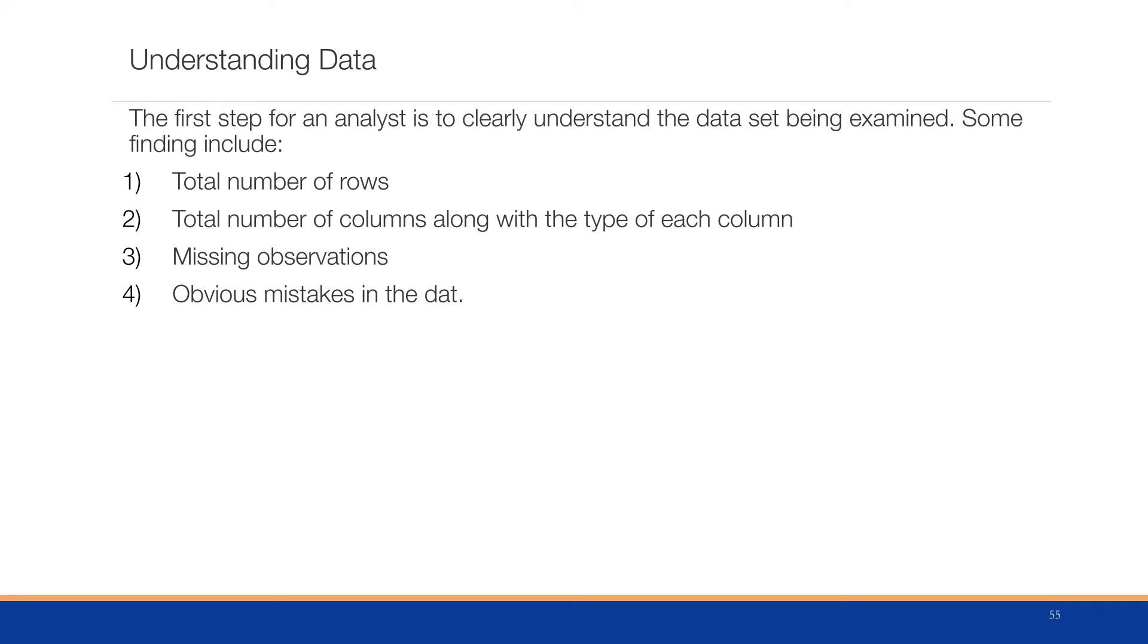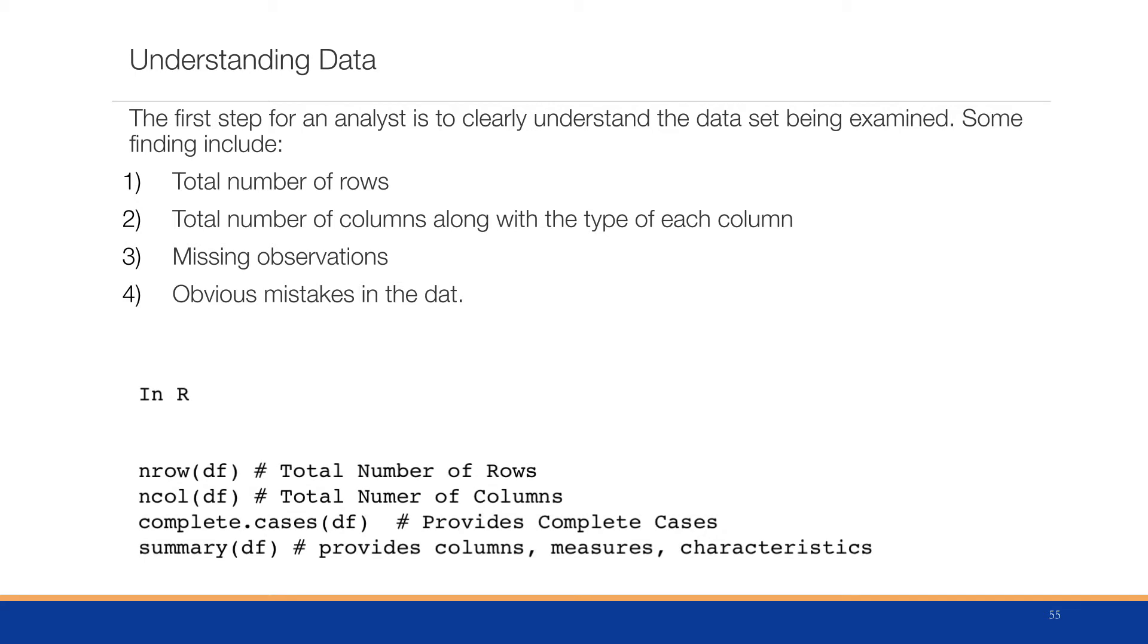The first step for analysis is to understand the data that's being examined, and this includes total number of rows, total number of columns, along with the type of each column, the number of missing observations, and obvious mistakes in the data.